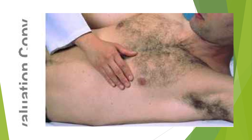The hand is placed on the precordium, slightly lateral to the exact place where the apical impulse is felt, because when the patient is put in the left lateral position, the apical impulse shifts by approximately one to one and a half centimetres. You then try to feel exactly what you are sensing with the palpatory finger in this left lateral position.